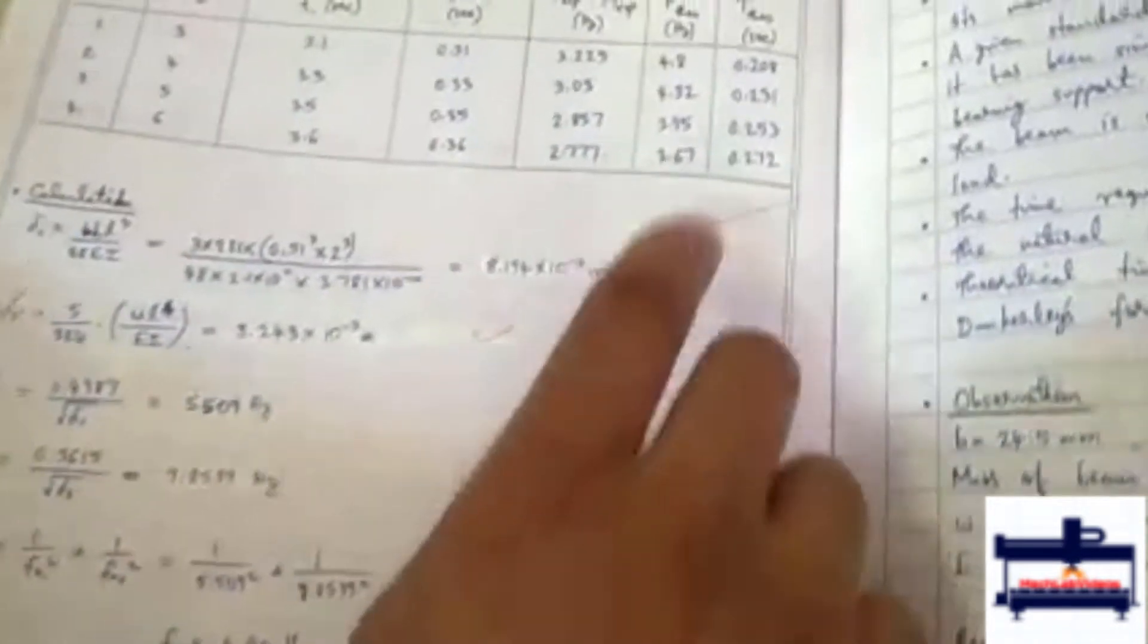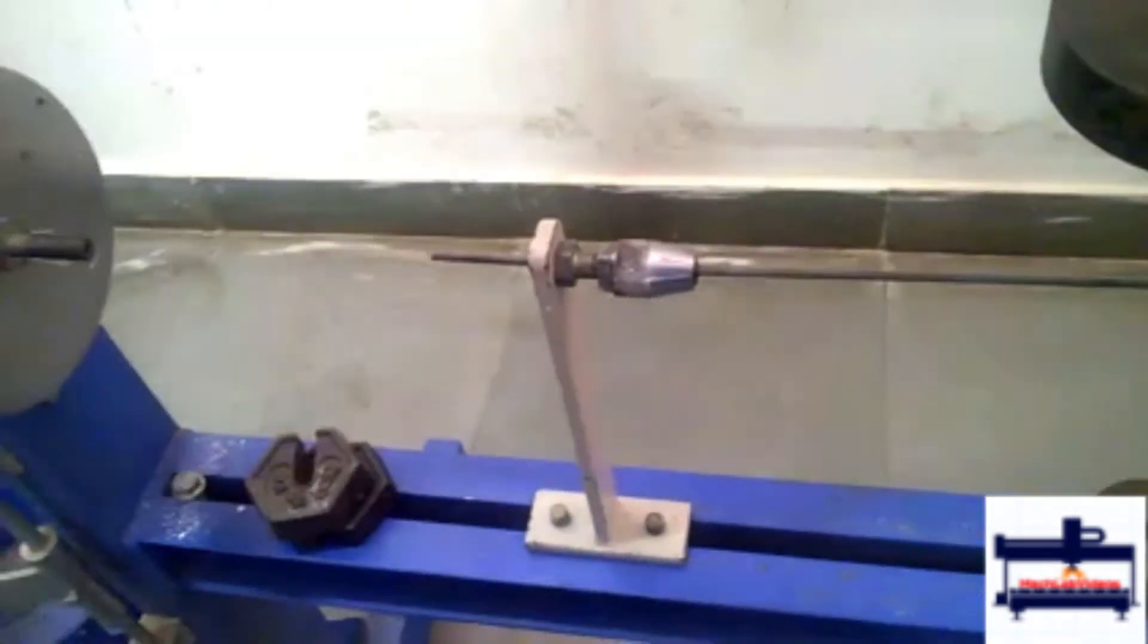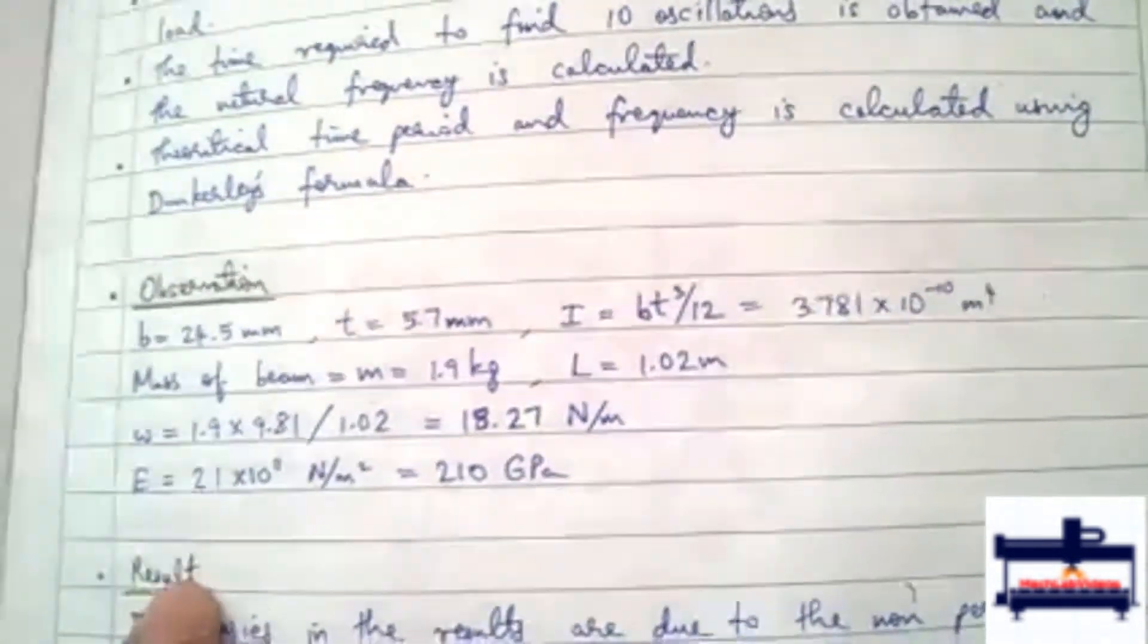FN becomes the theoretical frequency. 1 by FN will give you the theoretical time period. And this is the specification for this experiment.